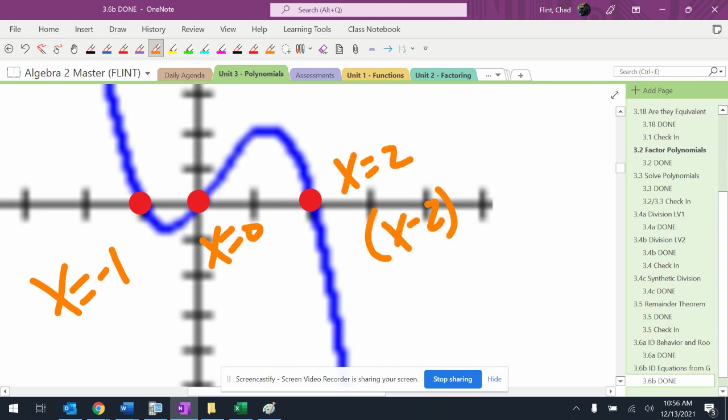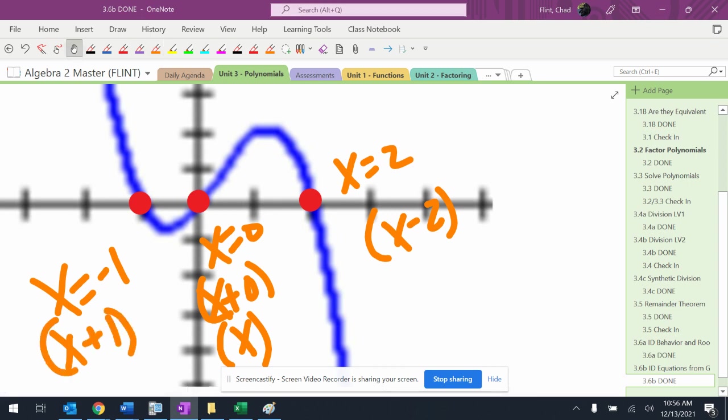Where did they come from? That one came from x minus two. This one came from x plus zero, but it's really just x. X plus zero is x. And then this one came from x plus one. That's where they came from.